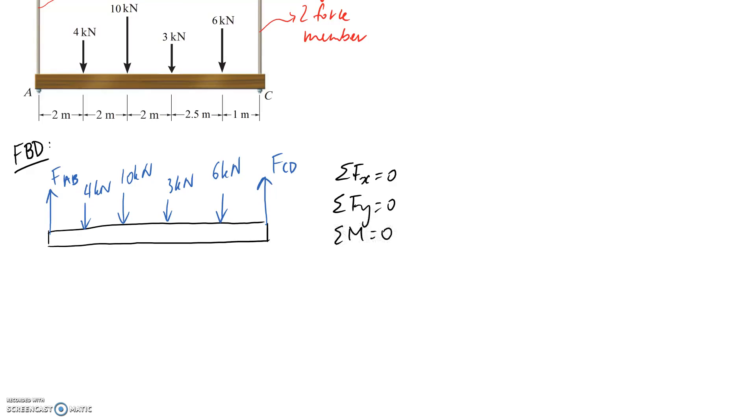Our last option is sum of moments. If we conveniently pick this point here or this point to sum about, we'll have only one unknown in the equation, which makes our life easier. I'll go with point A. So if we sum our moments about A, they have to equal zero. I'm assuming anti-clockwise is positive. This one is acting through point A so it doesn't create a moment. The next one is the 4 kilonewtons acting at 2 meters from A, and it's going to rotate clockwise so it becomes negative.